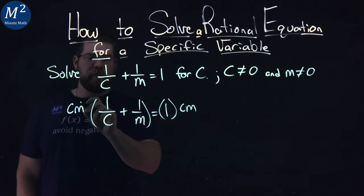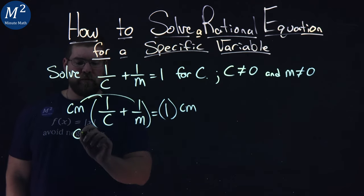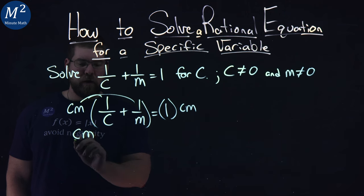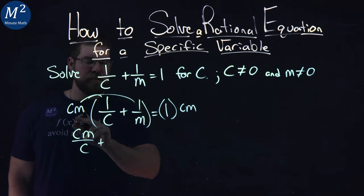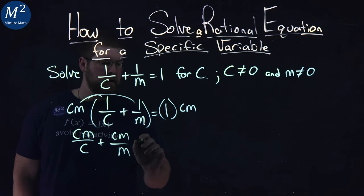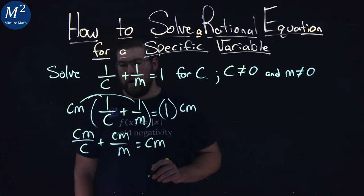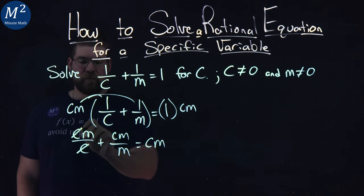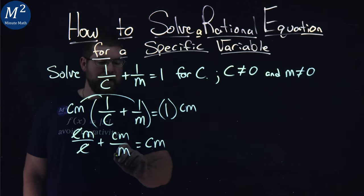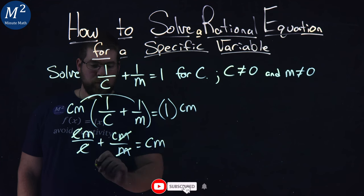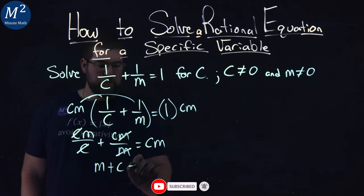With that, let's multiply cm across to both parts. We have cm times 1/c plus cm times 1/m equals 1 times cm. From there, the c's cancel right here on the left-hand side, and the m's also cancel. So we have m + c = cm.